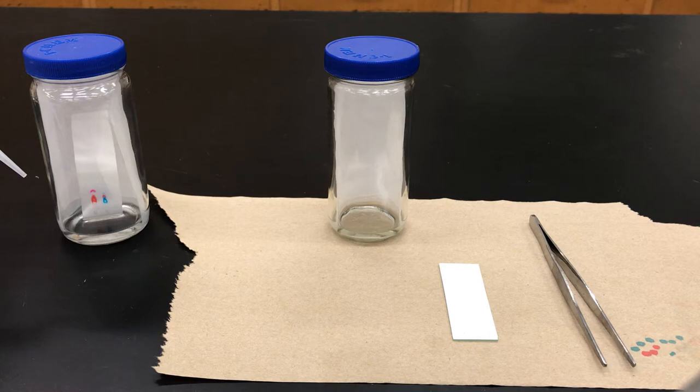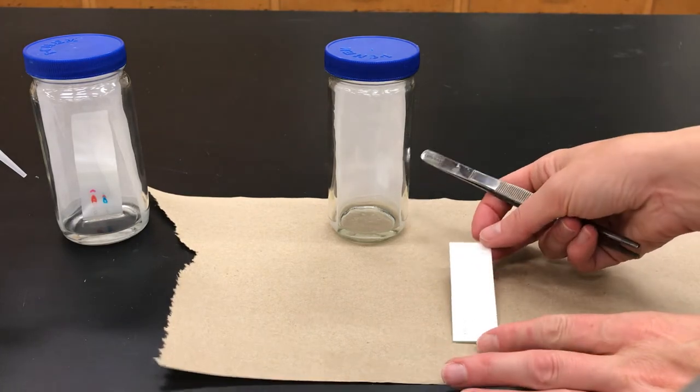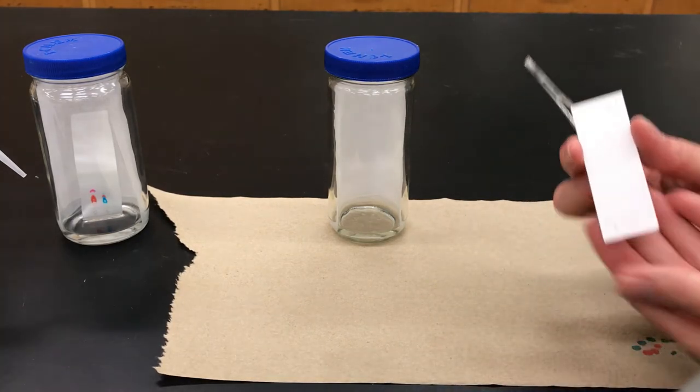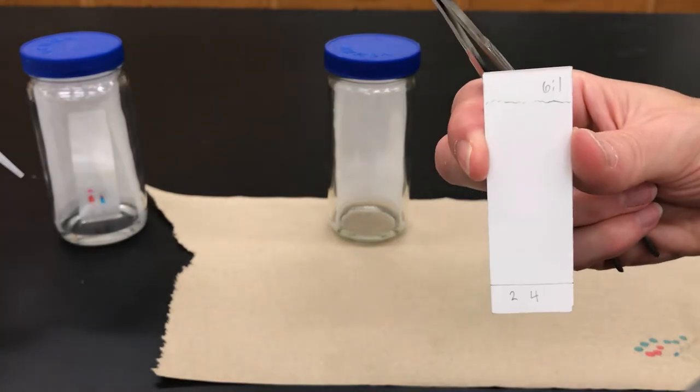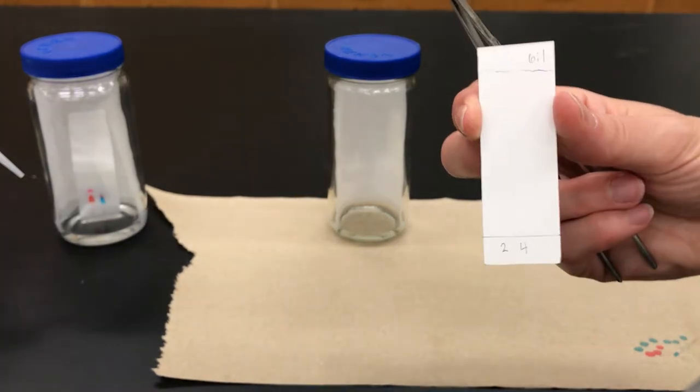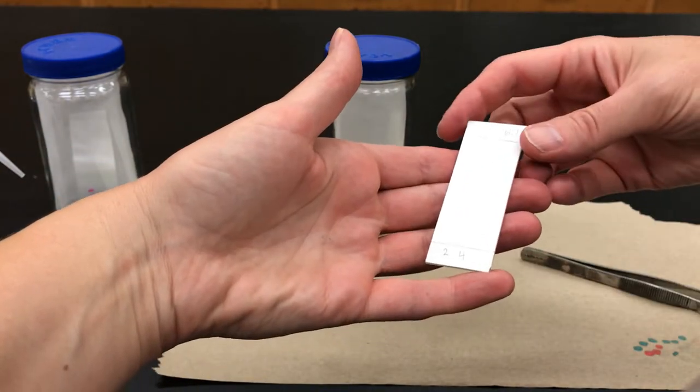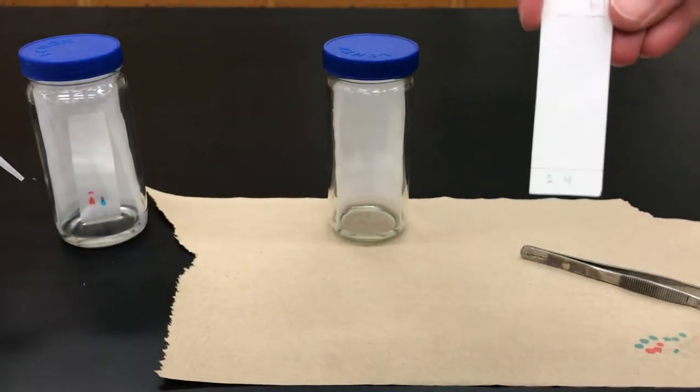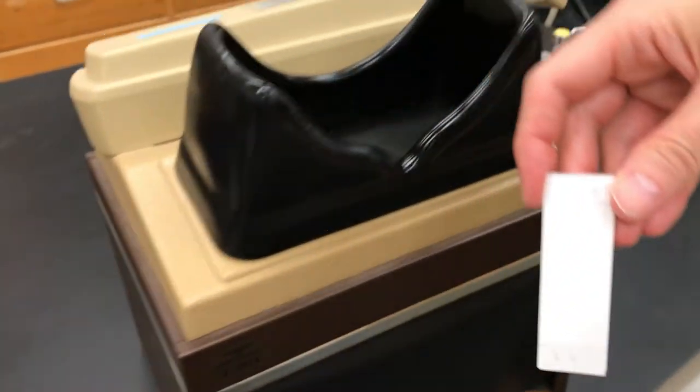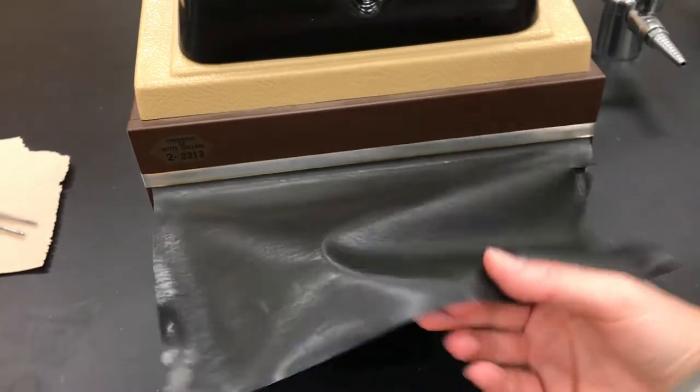It's more common that organic compounds are invisible to the naked eye, and so you have to do something afterwards to see where the spots ended up. For example, here is a TLC that I ran in the last video and there are molecules there, we just can't see them. So we have to do some sort of visualization technique to see where they ended up. Probably the most common technique is to use ultraviolet light because many organic compounds absorb UV light.